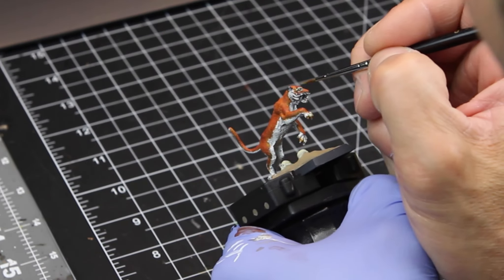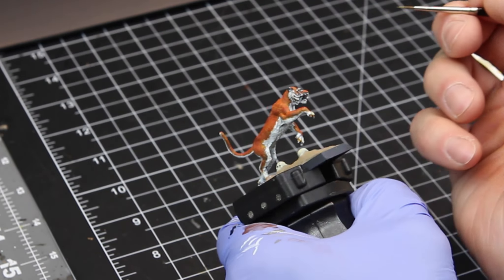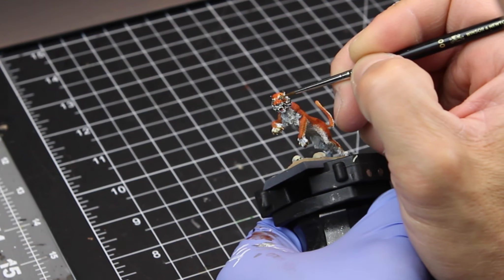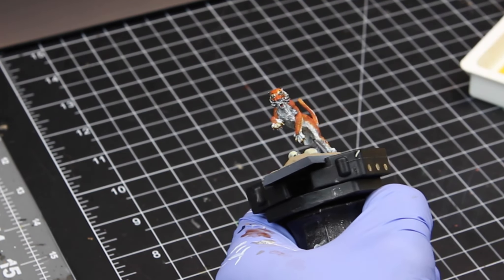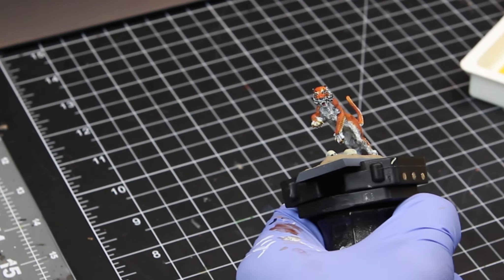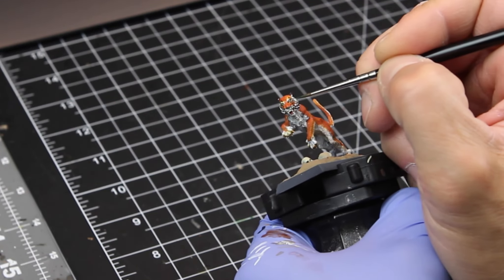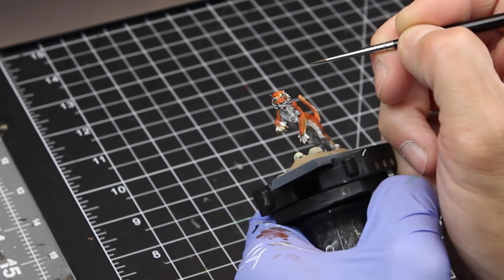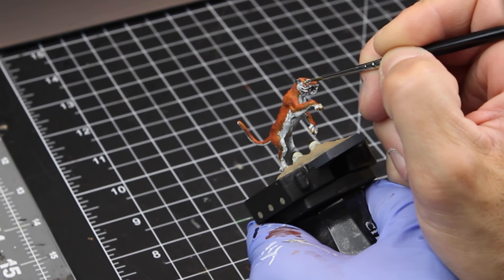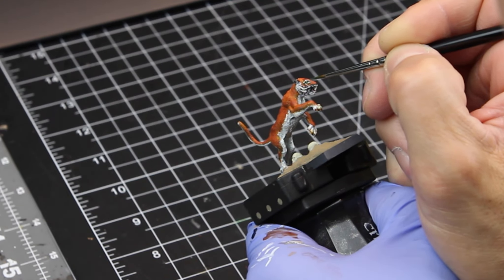And we just want to make sure our hands are locked in. You can see I have my left hand resting on the table. And my right hand is resting on top of my hand holding the miniature. And that was just a little bit of green ink by Vallejo that's been watered down just a little bit to kind of accentuate the green in the eyes.